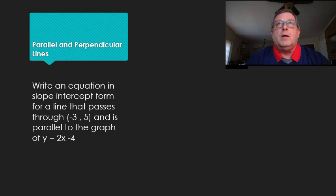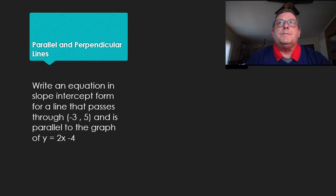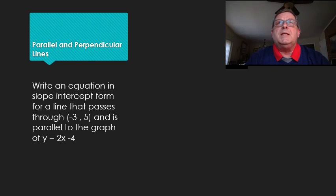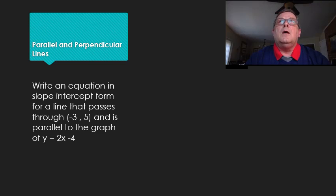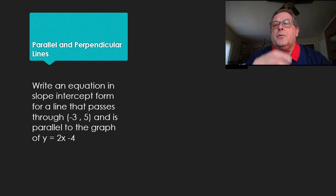Two lines that are parallel are going to have equal slopes. For a perpendicular line, the two slopes are going to be the negative inverses of each other — or another way of saying that is that they are the negative reciprocals of each other.